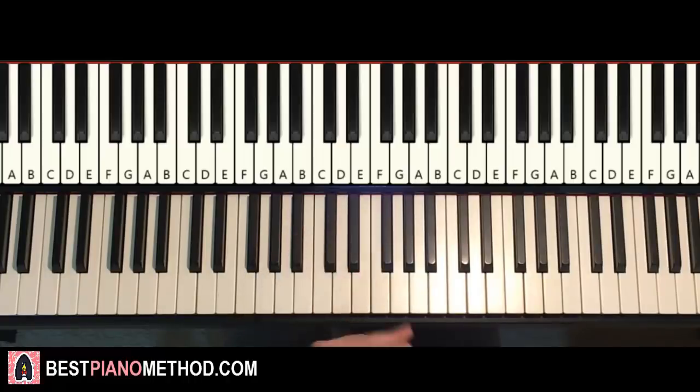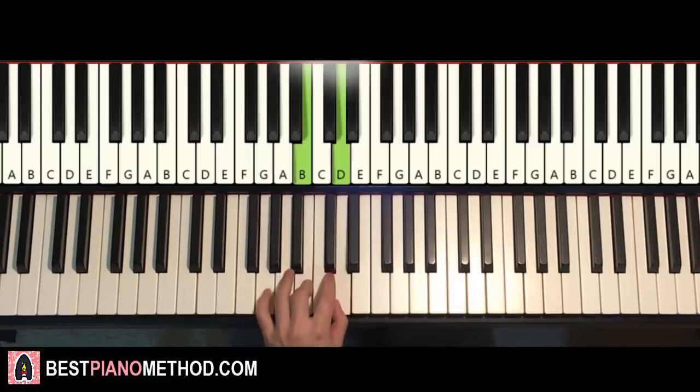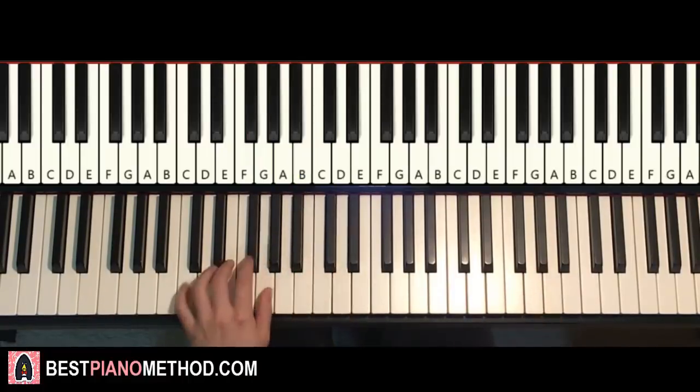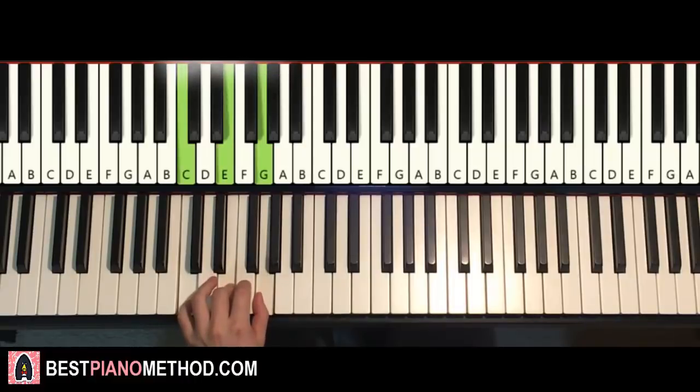Once you get that, left hand three chords. It's actually the same three chords as the second part, but just played a bit slower. So F major F A C, second chord G major, which is G B D, and third chord is C major, which is C E G.